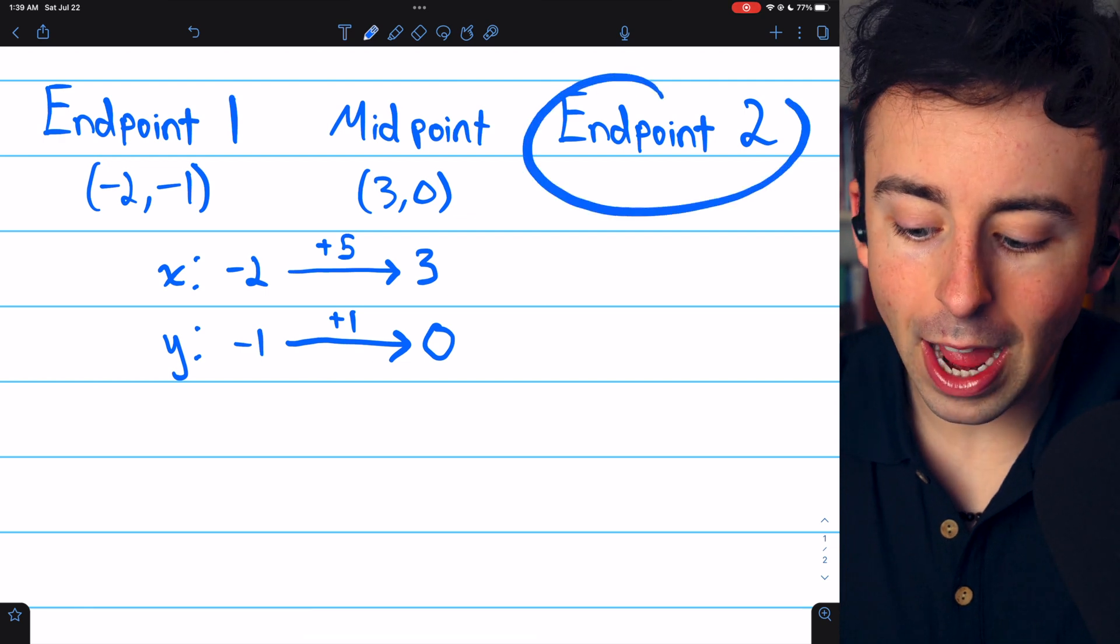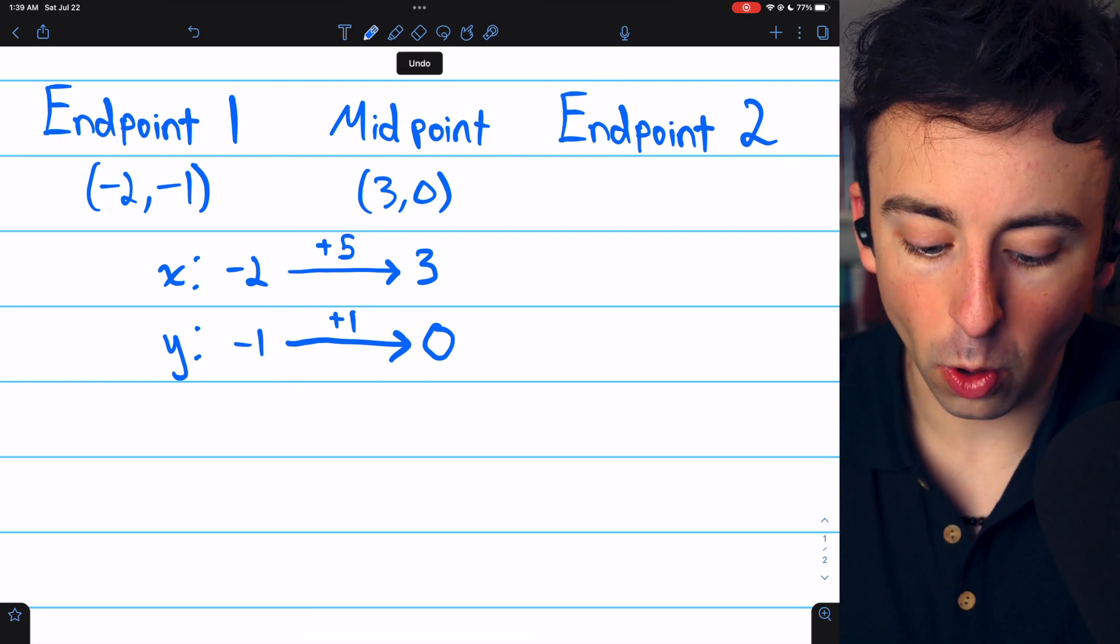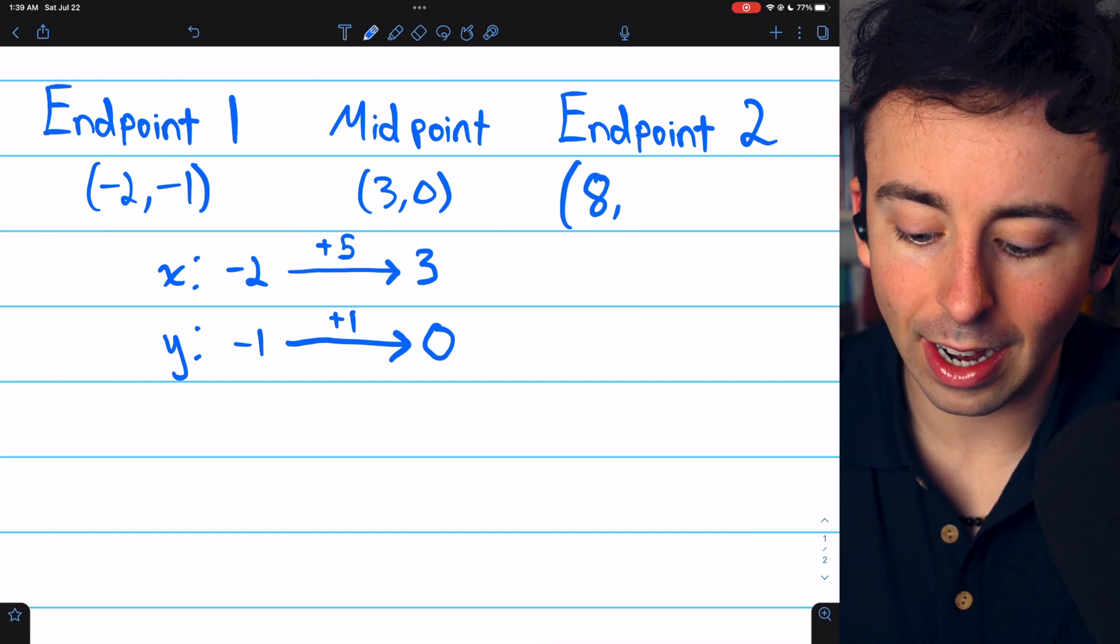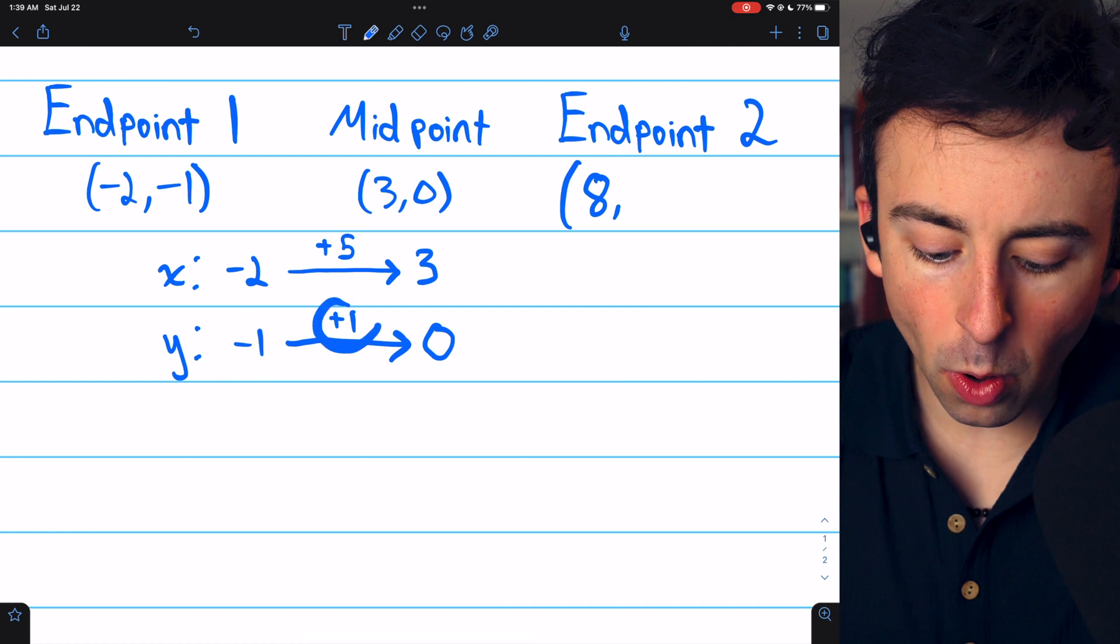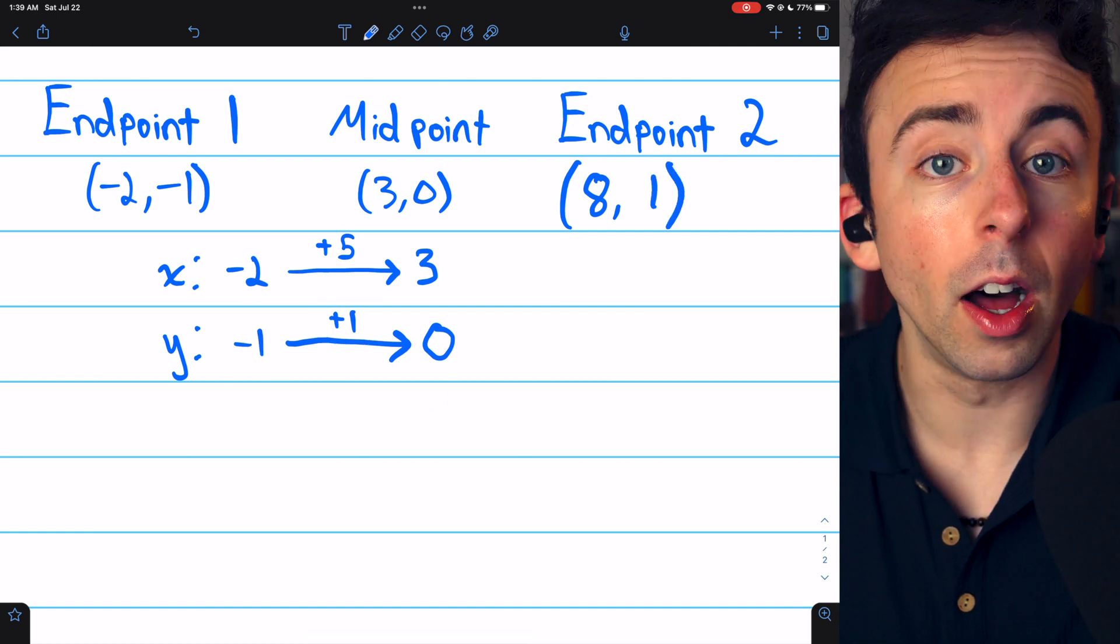Then to find the other endpoint, you just need to repeat this change. So go up 5 from 3, which gets us an x-coordinate of 8, and go up 1 from 0, which gives us a y-coordinate of 1.